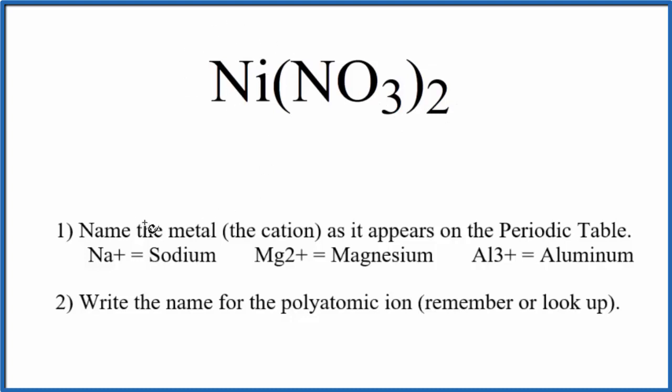Let's name the metal just as it appears on the periodic table. Ni, that's nickel. And then NO₃, that's the nitrate ion, one you should recognize. So we write nickel nitrate, lowercase n. This is the name we have so far for nickel nitrate.